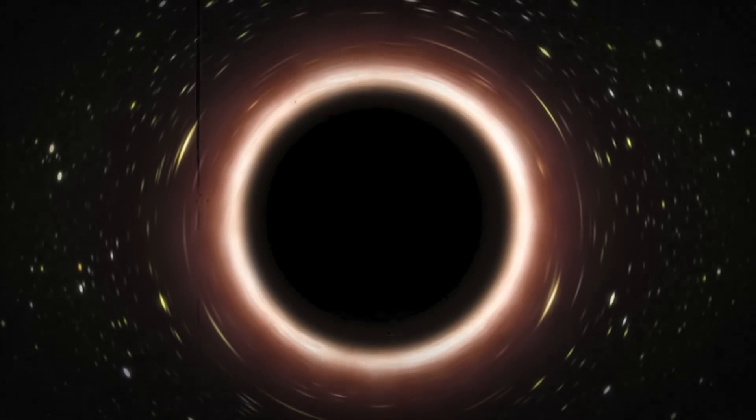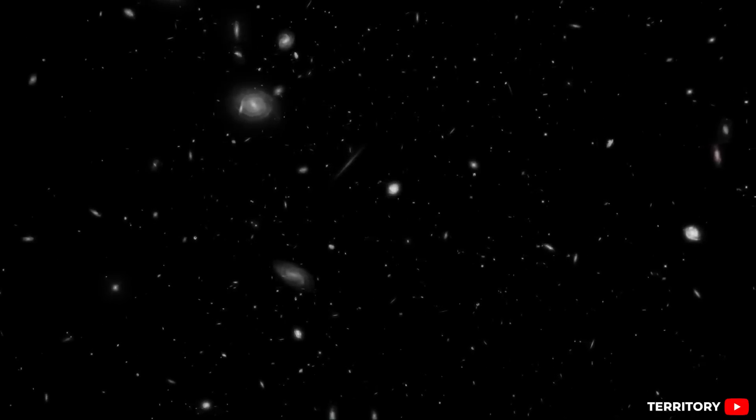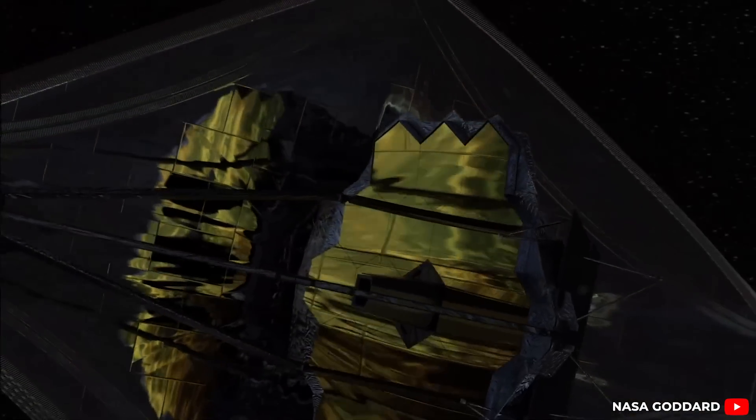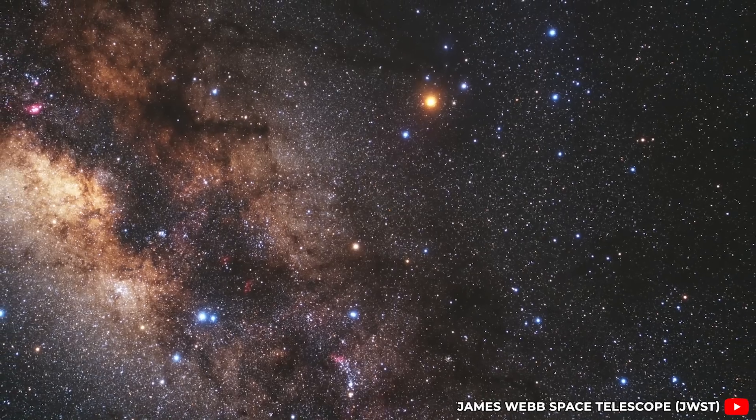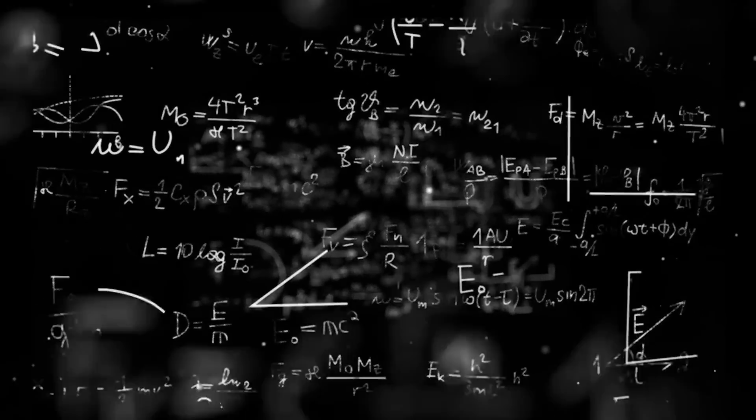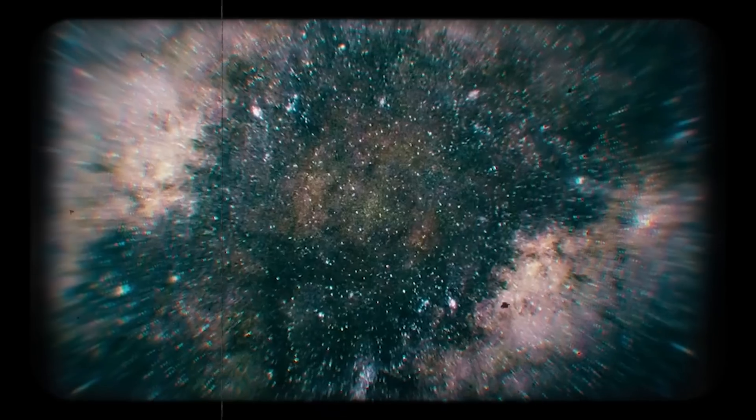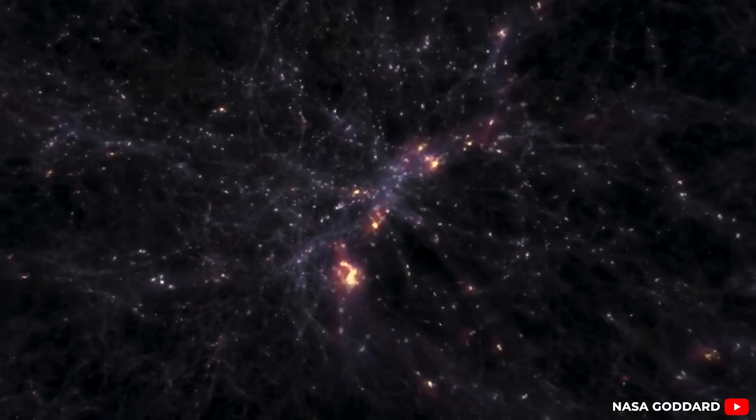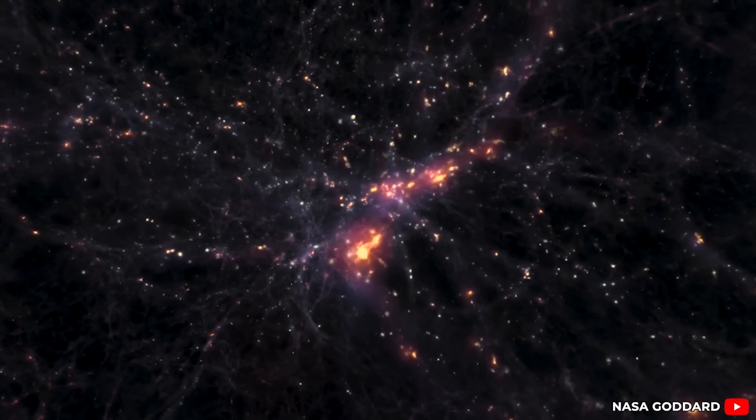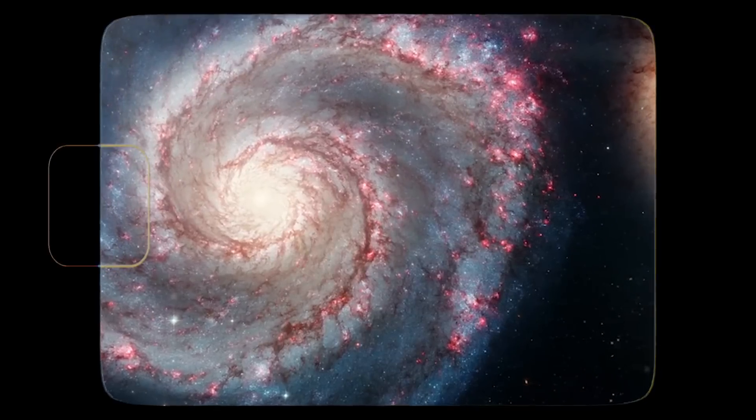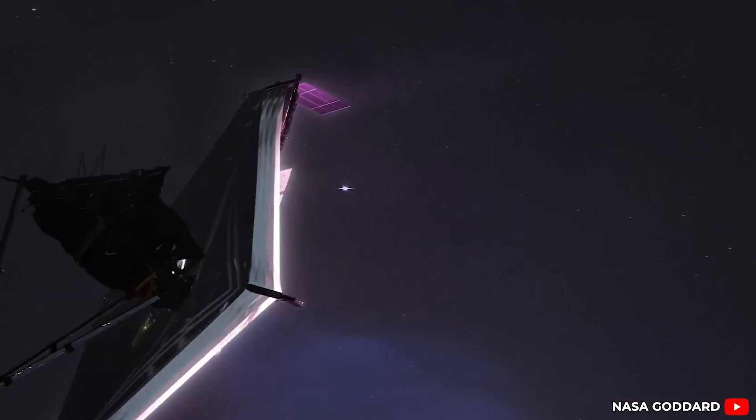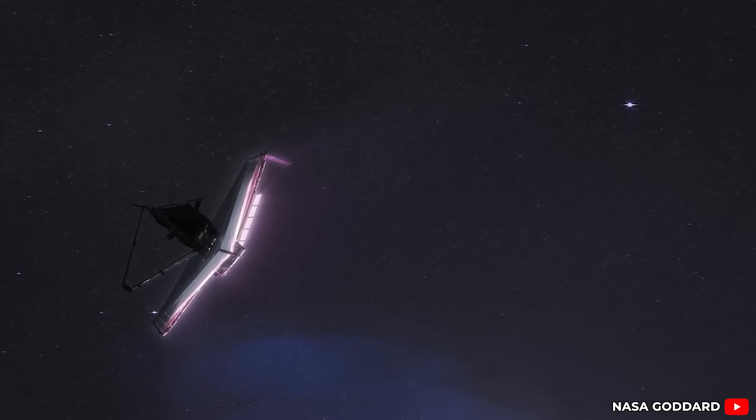And this is where things took a stranger turn. Amid the galaxies and black holes, Webb's instruments began picking up signals that didn't fit into any neat category. Deep field images from JWST revealed odd energy spikes, strange light distortions, and patterns that don't line up with what our current physics would predict. Some could be explained by dust interference or lensing effects, but others are still on the mystery shelf. Are we seeing fingerprints of dark matter structures or distortions caused by exotic phenomena we haven't even theorized yet?